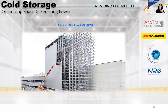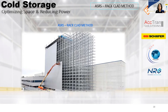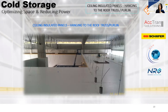Another way to construct option three is using the rack-clad system. In a rack-clad system, the racking is utilized to support both the wall panels and the ceiling panels. The racking supports not only the stored goods but also the load of the building envelope panels. In a rack-clad construction, the racking is assembled first, and then the building envelope — walls and ceiling panels — is built around the racking structure until the whole warehouse is completed. Both methods have pros and cons, but they are both proven methods.